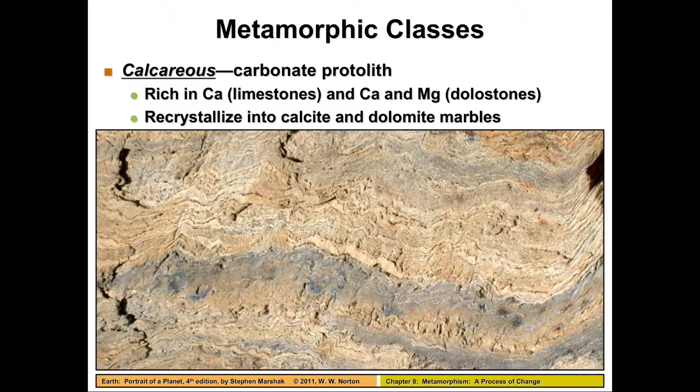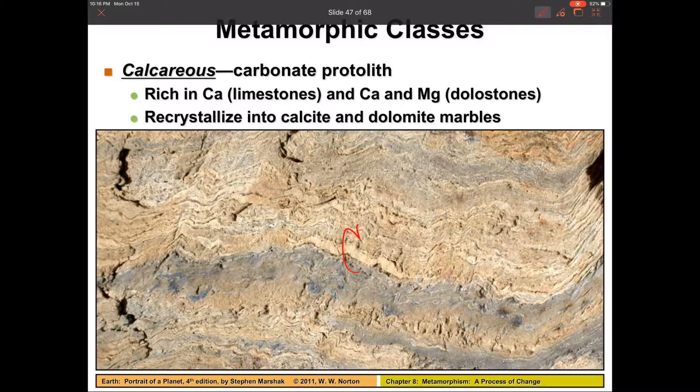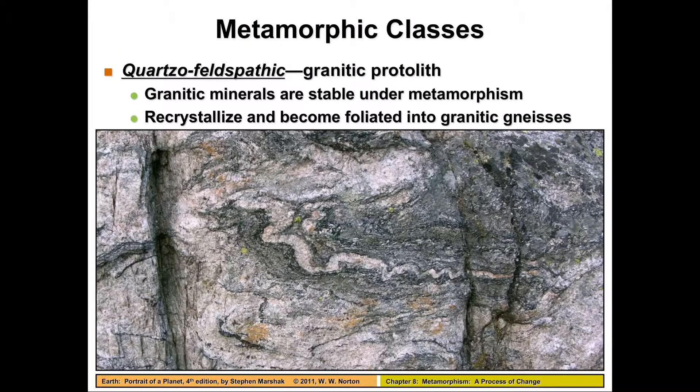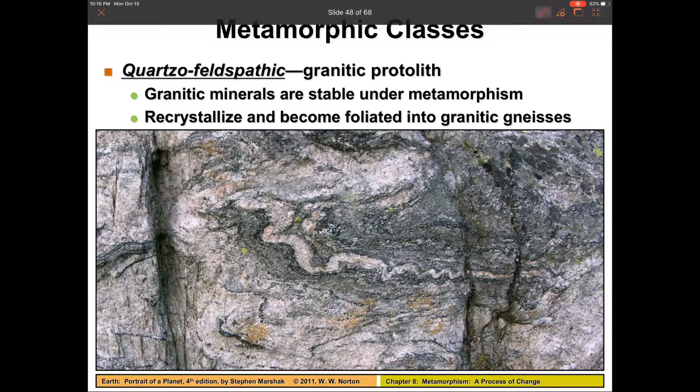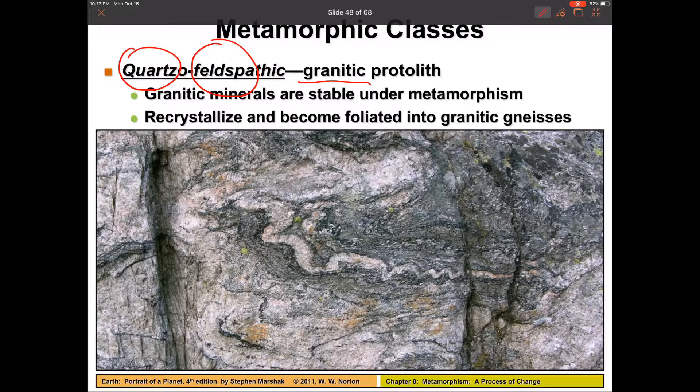We can also have a calcareous protolith, which is carbonates. This is mostly our limestones and dolostones, so it's going to start out mostly as calcite and it can turn into that marble. And then we can have this fancy-sounding one here, our quartzofeldspathic, which hopefully you recognize that that means it has a lot of quartz and a lot of feldspar, which is basically granite. So when we take granite, it's really pretty stable under any kind of metamorphism because it's a pretty durable rock. But with the extreme amounts of pressure, it can become foliated and turn into some of those gneisses.